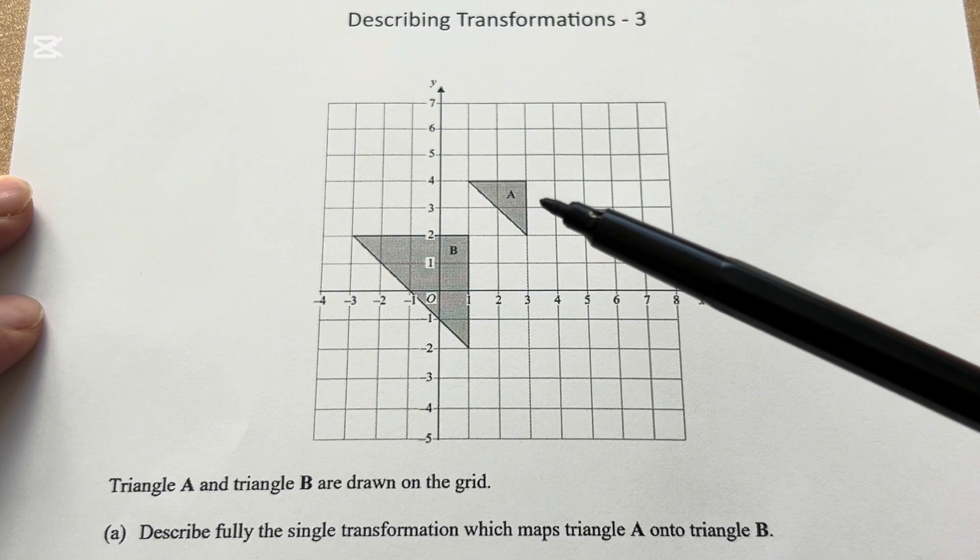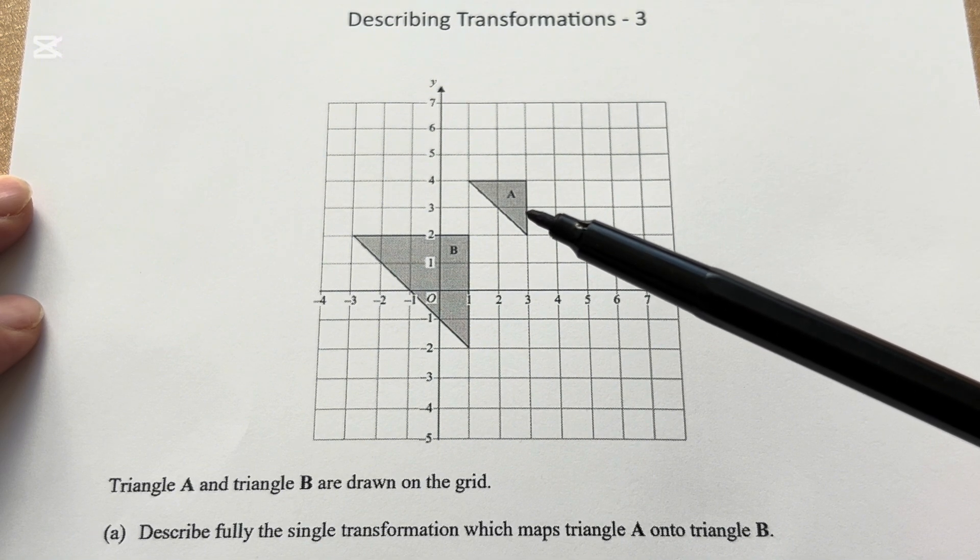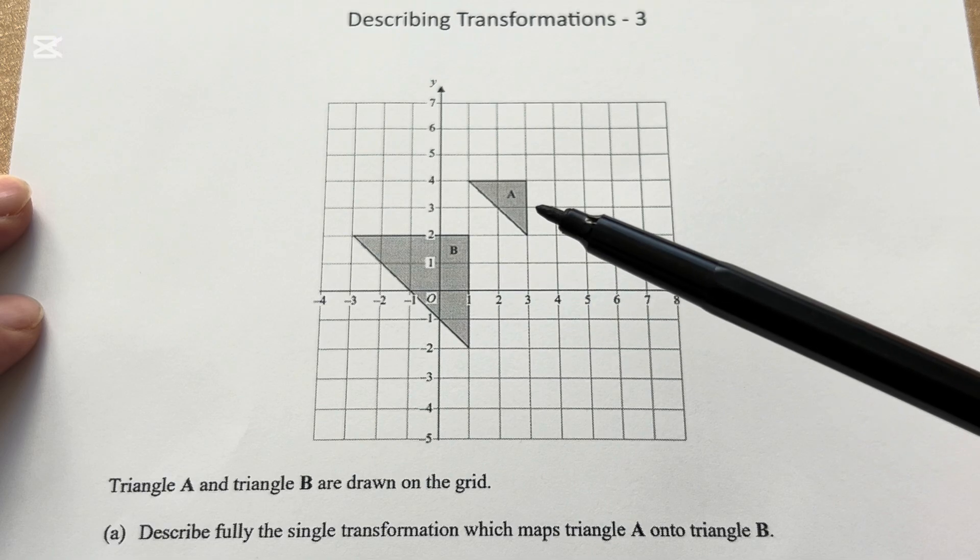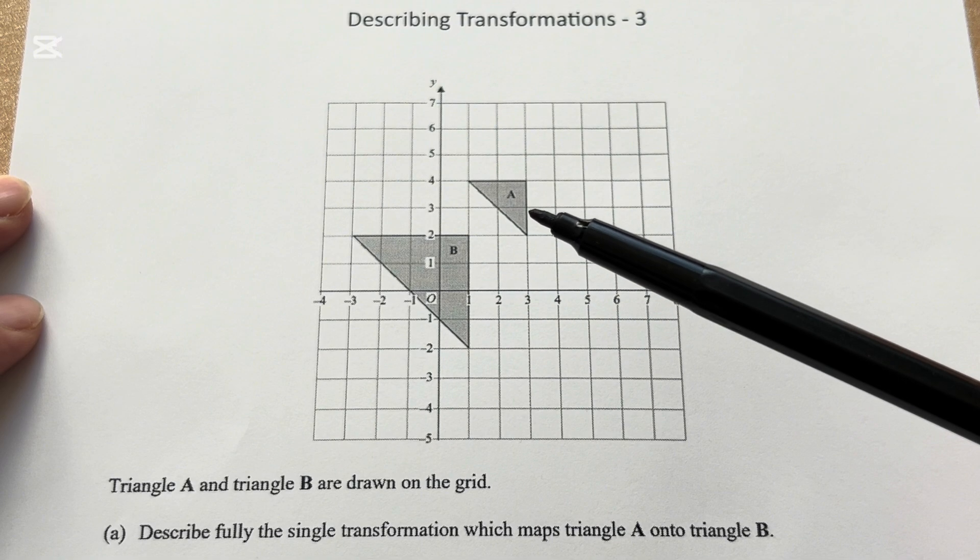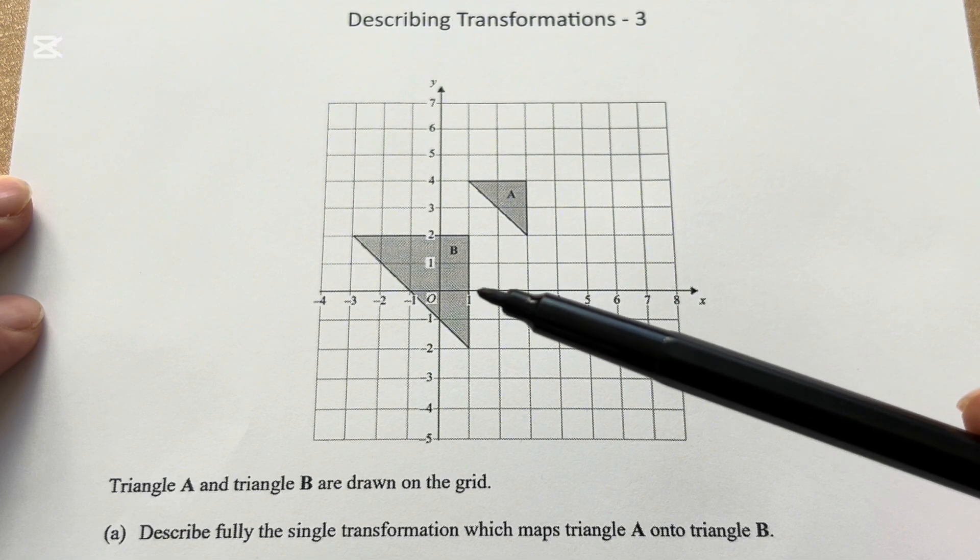Now, you can easily identify the type of transformation here. Triangle A onto triangle B is an enlargement.